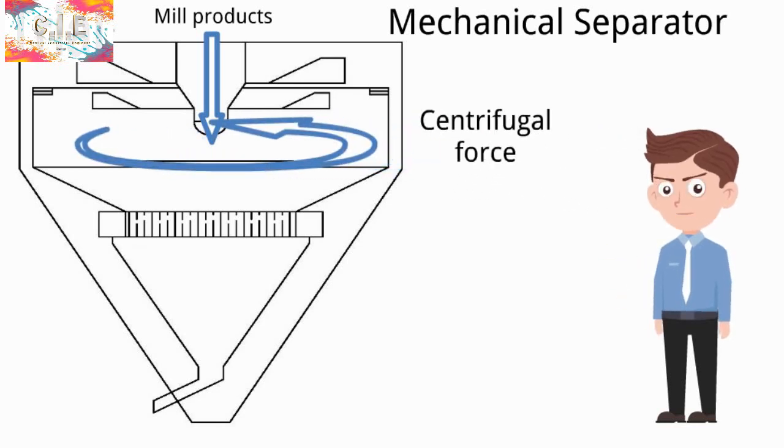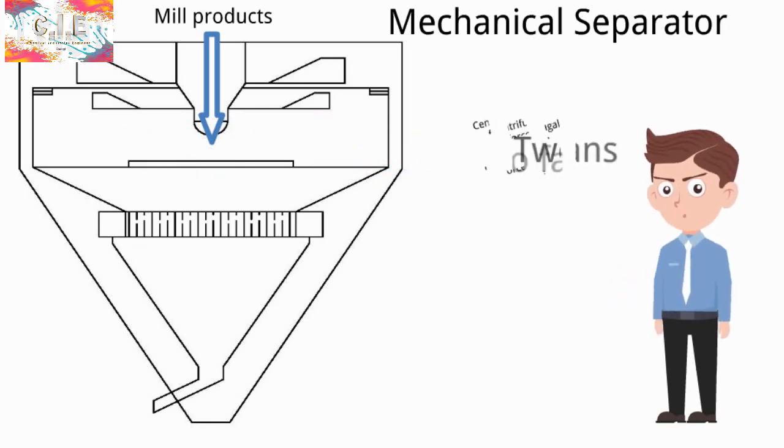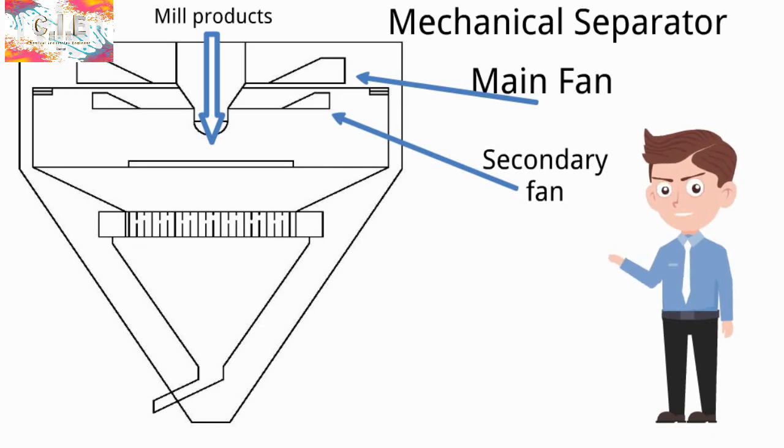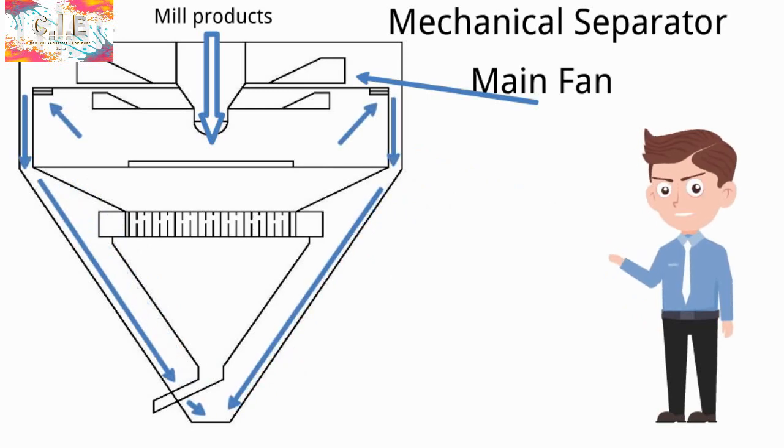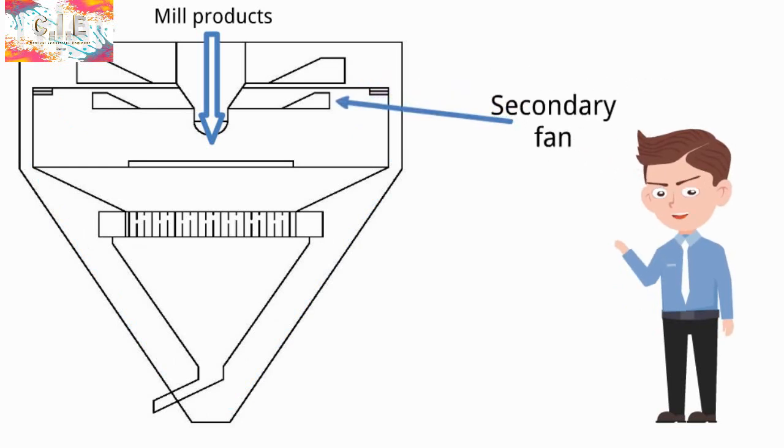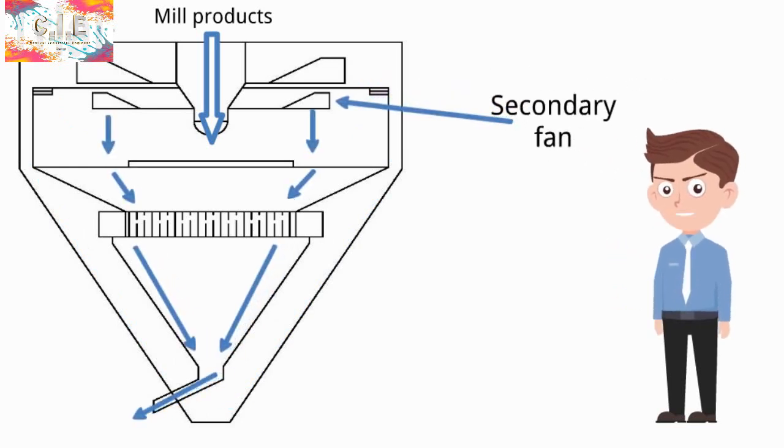It has two fans: main and secondary fans. Main fan makes an air cycle to motivate the materials leaving the inner cone, while the secondary fan makes an opposite air cycle to take the coarse material from the coarse discharge outlet.